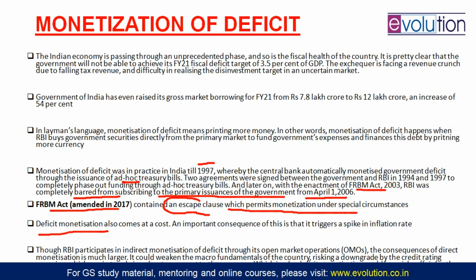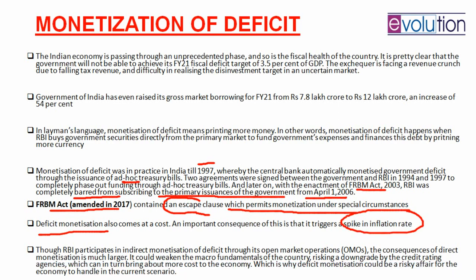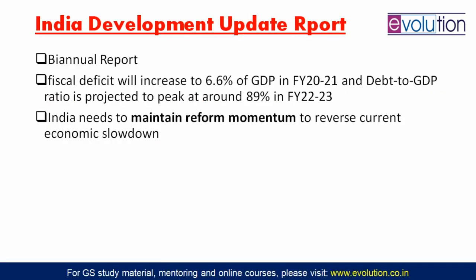Deficit monetization also has a problem: if you print more currency, there will be a spike in inflation. Indirect monetization through open market operations is already happening. But if you go for direct monetization, the inflation impact will be significant and credit rating agencies may downgrade the government's credit. However, some intellectuals argue that since demand in the economy is very low, printing more money will not cause inflation.